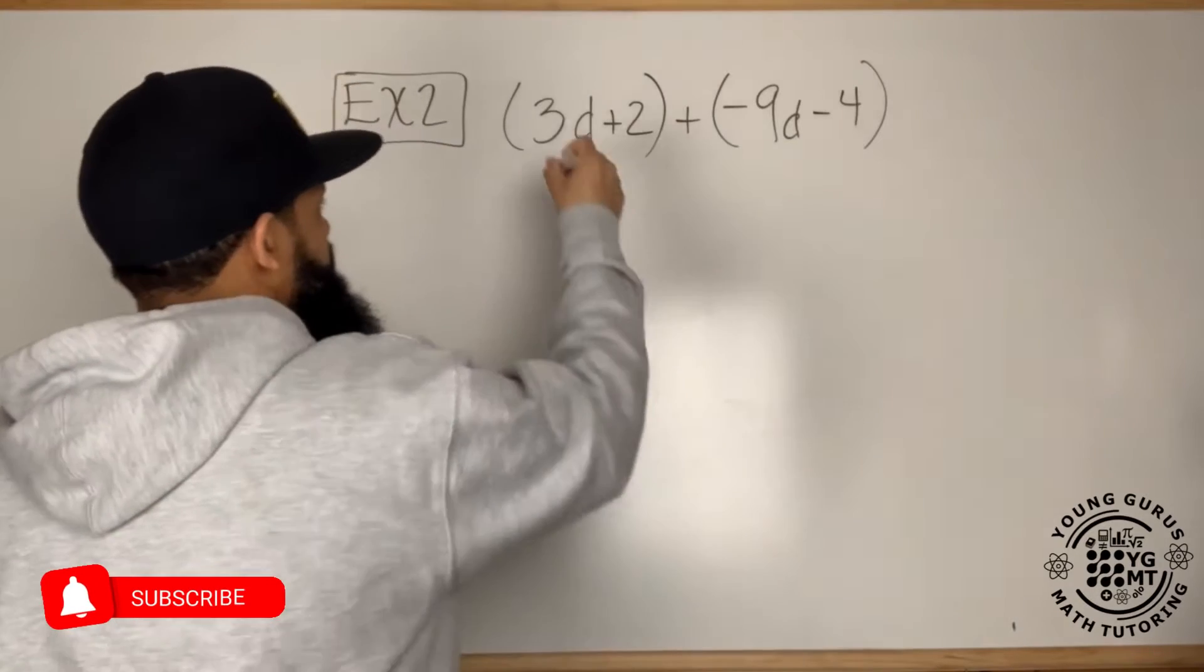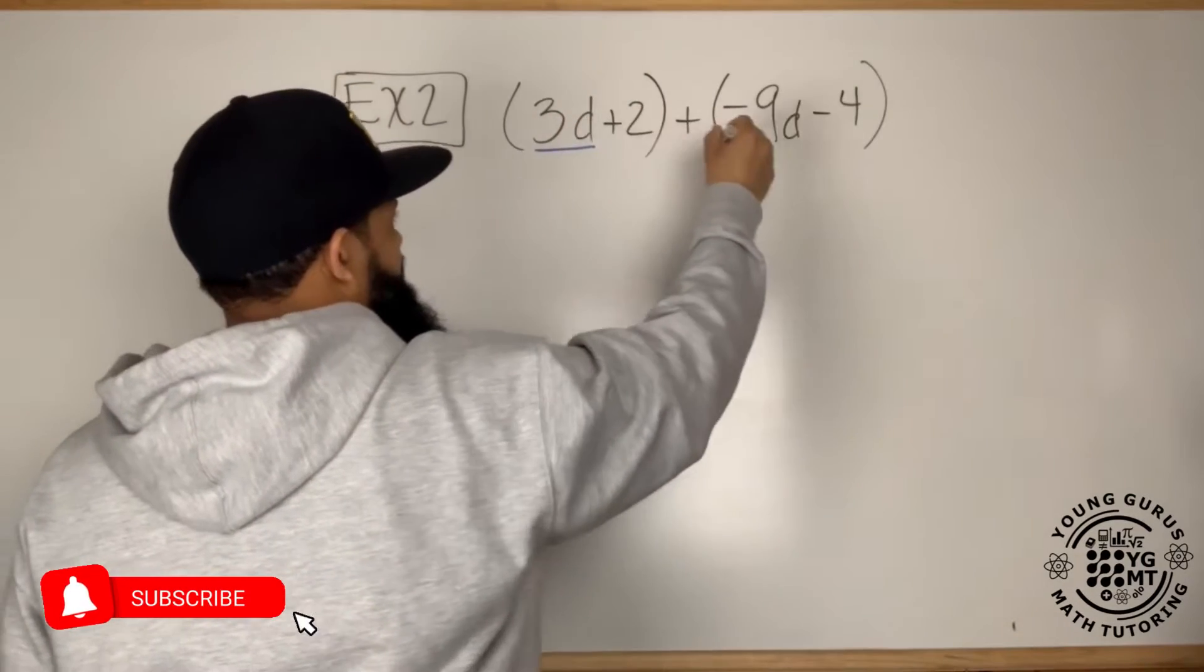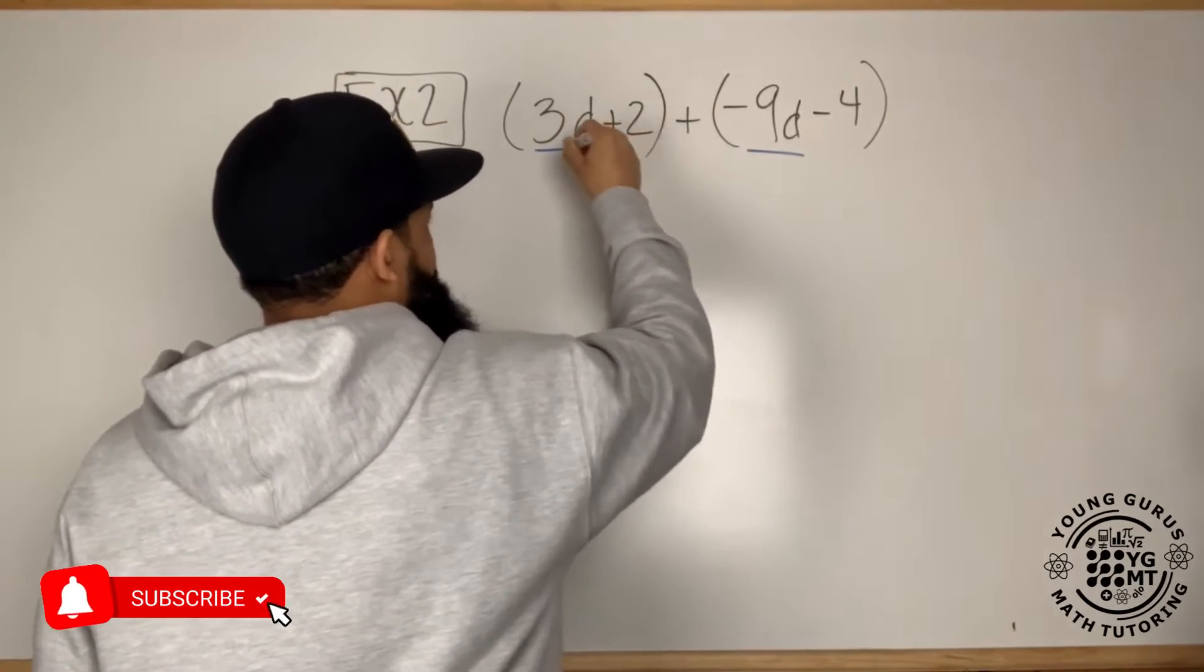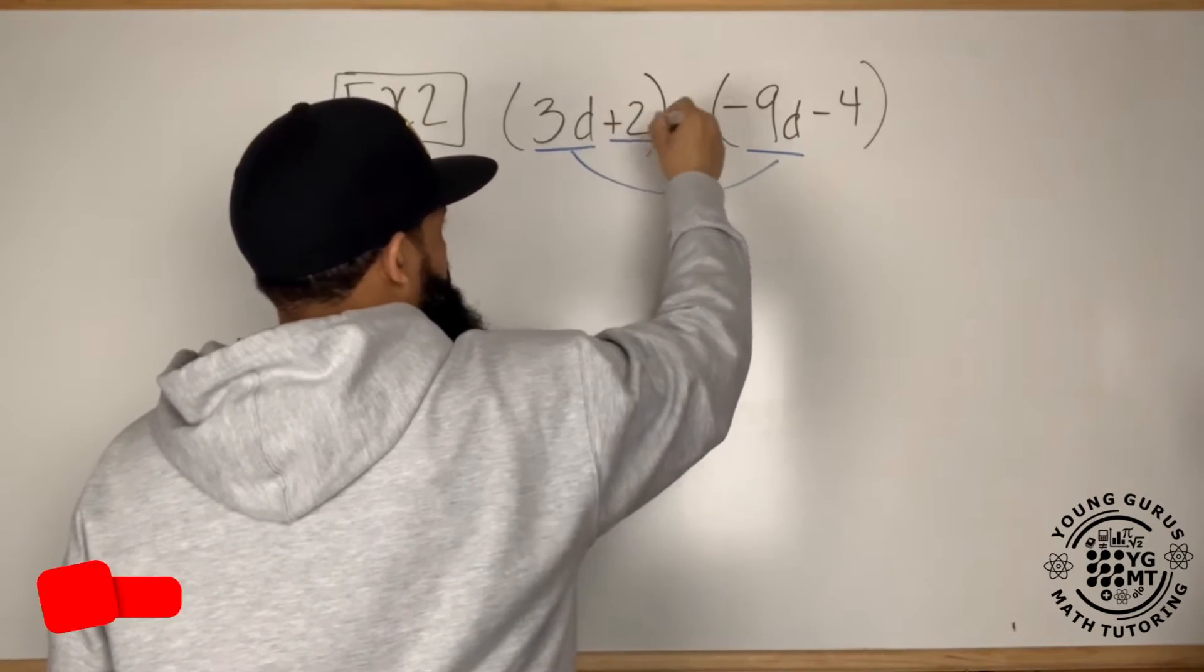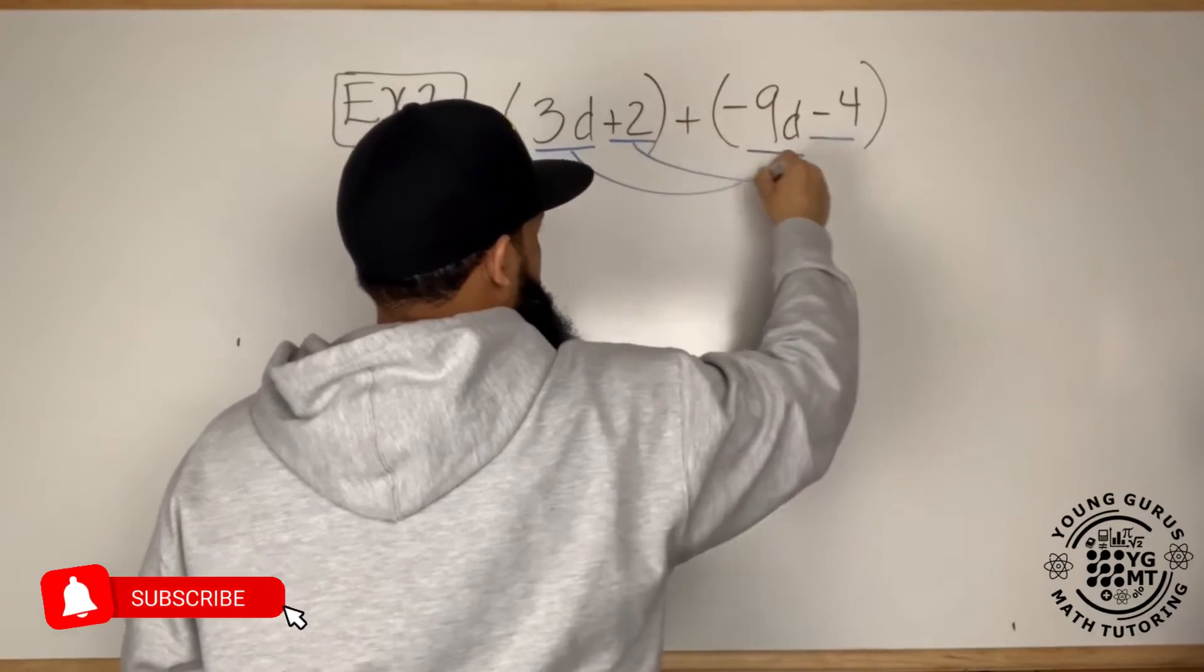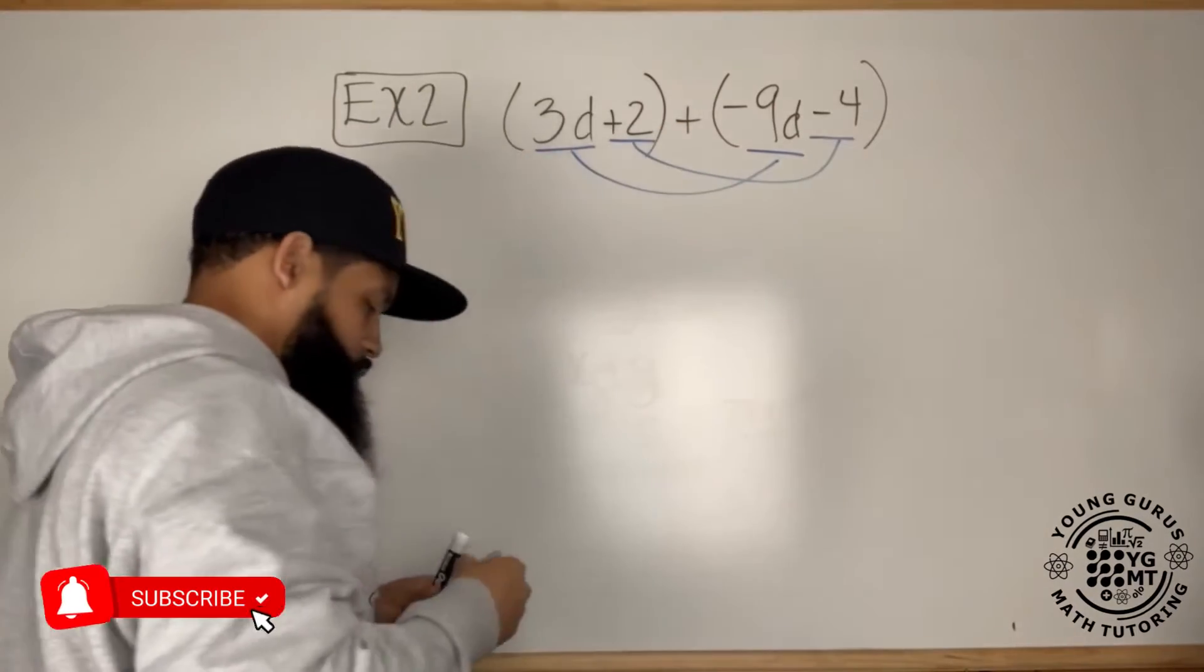In this case, the 3d, I'm connecting that to the negative 9d. And then I have the plus 2 and the negative 4, minus 4.